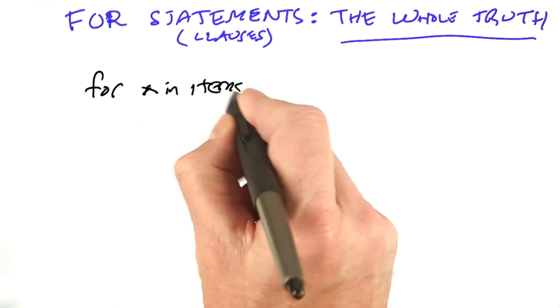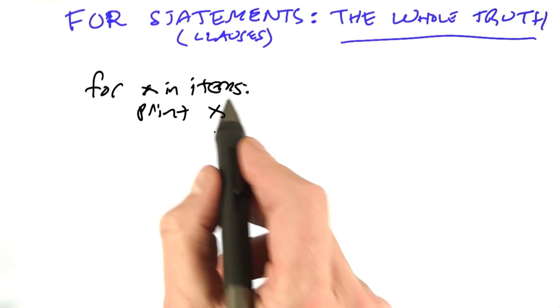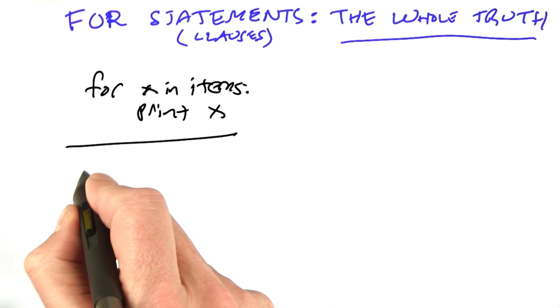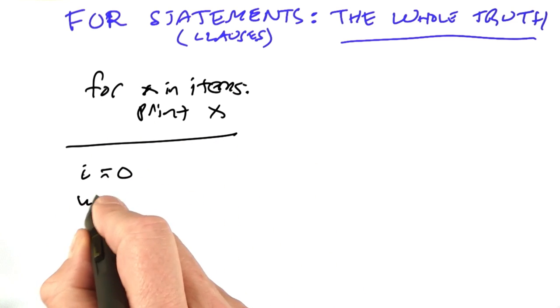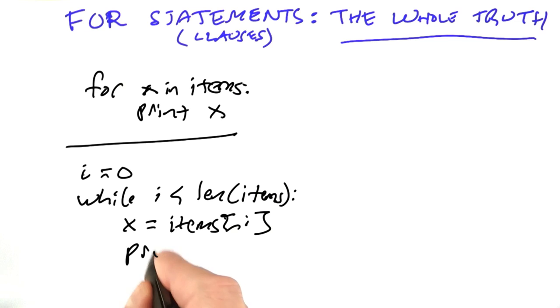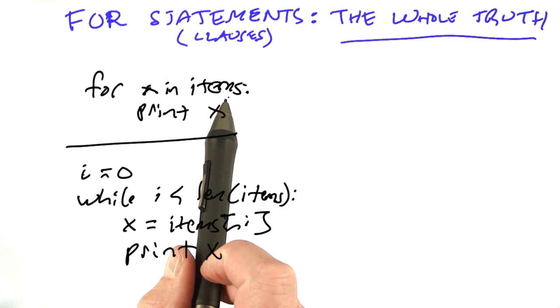Now, when I say for x in items, print x, you probably have a model that'll look something like this. Assuming items is a list or a tuple or a string, you think of this code probably as something like i equals 0, while i is less than the length of the items, x equals items at i, and then print x. And that's a good model as long as items is one of these sequence types like lists.